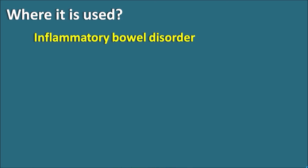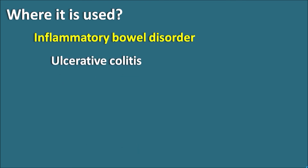Where is sulfasalazine used? Sulfasalazine is mainly used in inflammatory bowel disorder, particularly in ulcerative colitis - a condition where there is inflammation in the colon along with ulceration. Another inflammatory bowel disorder it treats is Crohn's disease, which leads to rectal bleeding, diarrhea, and inflammation in the colon. Sulfasalazine can be used in both these conditions.